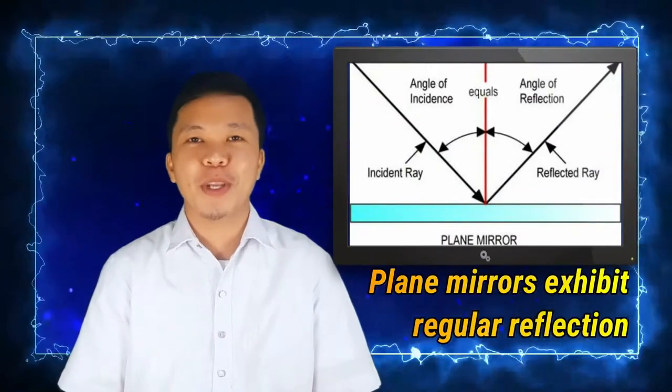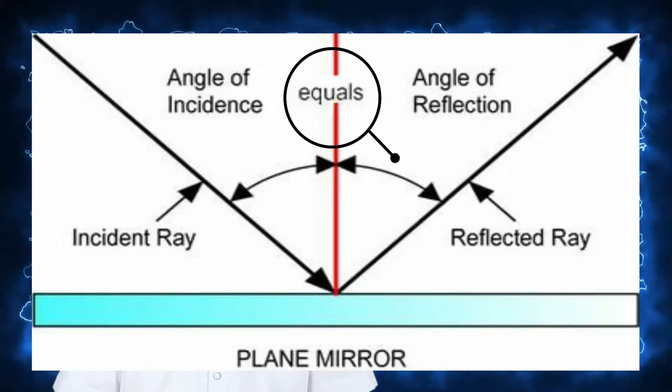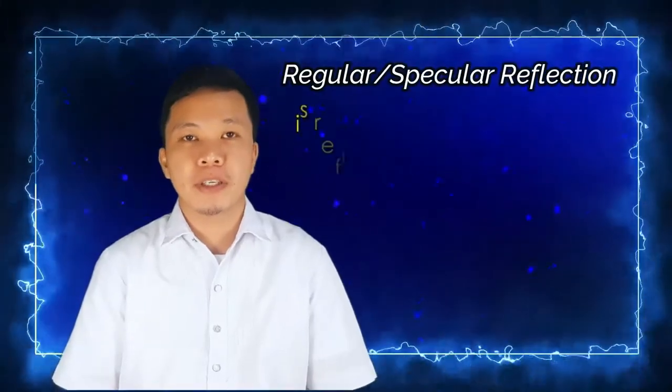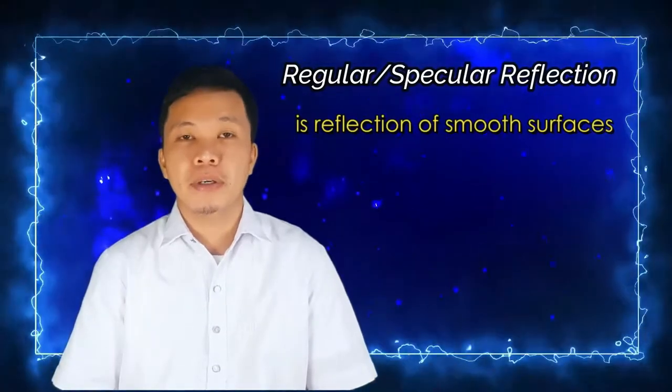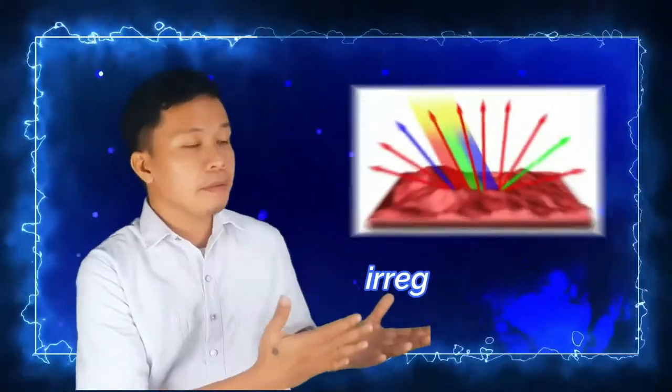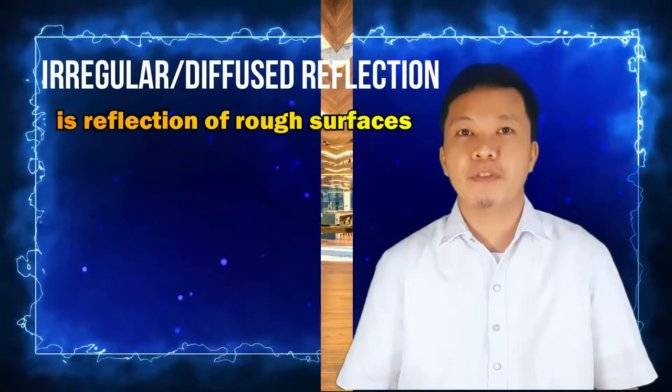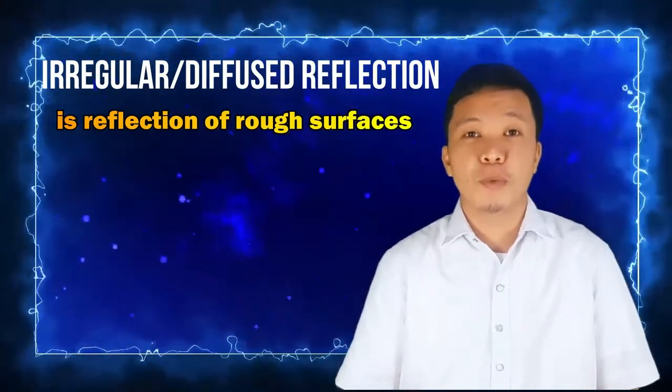Plane mirrors exhibit regular reflection where the angle of incidence is equal to the angle of reflection. Regular reflection is a reflection of smooth surfaces. All plain, shiny surfaces exhibit this kind of reflection. On the other hand, irregular or diffused reflection illuminates shaded areas such as under the trees and inside the buildings. Irregular reflection is a reflection of rough surfaces. This is observed in objects with irregular surfaces like rocks and buildings.